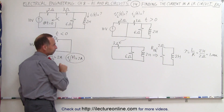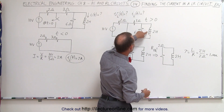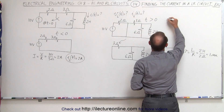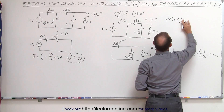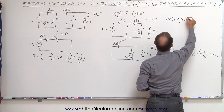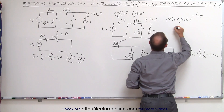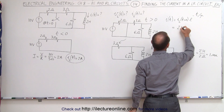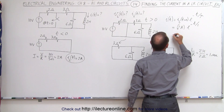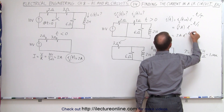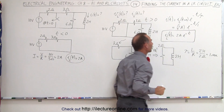We know the initial current, we know the time constant, so from that we should be able to write the equation that determines the current through the inductor after T equals 0. That means I as a function of time equals the initial current at T equals 0, times e to the minus t over tau. So this is equal to 2 amps times e to the minus t over 1, or we can simply write this as 2 amps times e to the minus t. That's the current through the inductor after time equals 0.